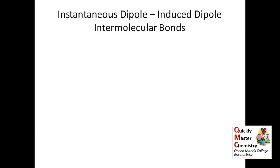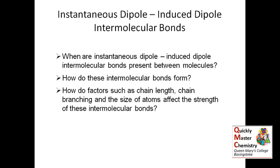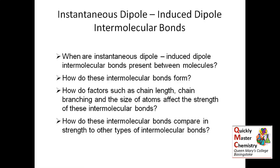This presentation looks at the topic of instantaneous dipole-induced dipole intermolecular bonds. There are a few things you need to know about these. Firstly, you need to be able to say when you get this type of intermolecular bonding between molecules. Secondly, you need to be able to explain in detail how these intermolecular bonds form between a pair of molecules. Thirdly, you need to be able to discuss the factors that affect the strength of this type of intermolecular bonding. And fourthly, you need to be able to compare the strength of this type of intermolecular bonding to other types of bonding.